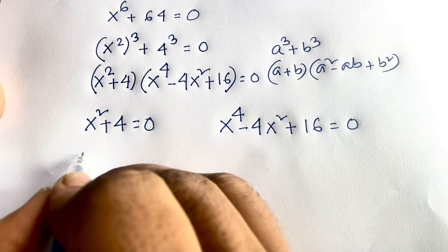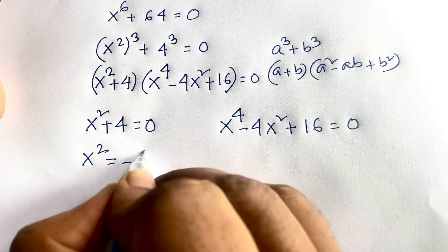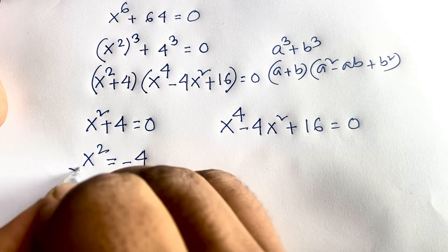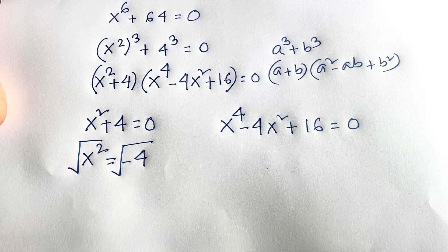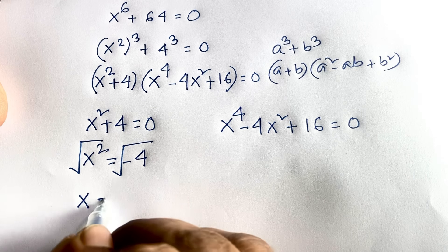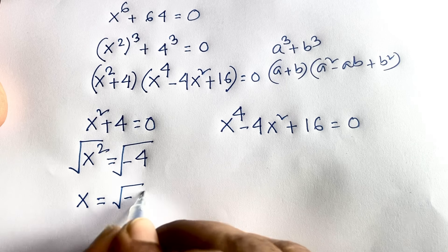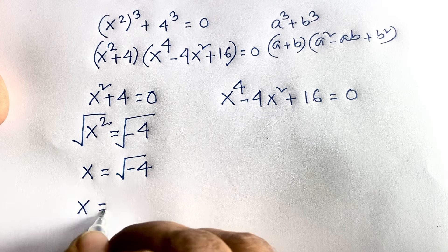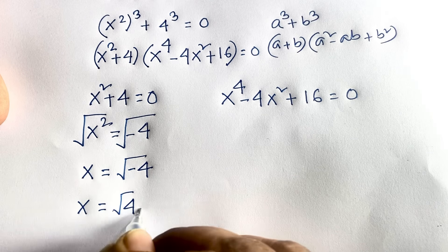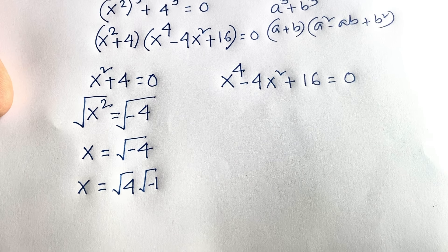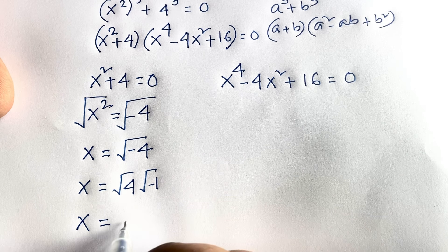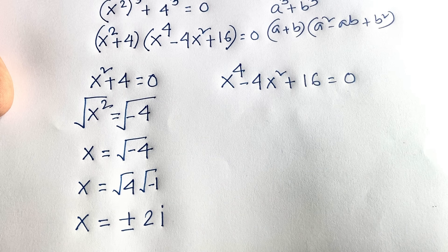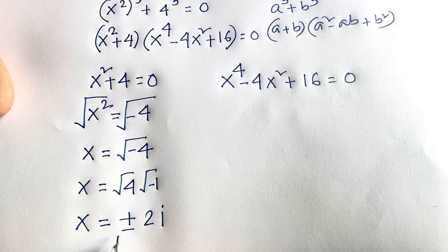From x squared plus 4 equals 0, we get x squared equals minus 4. Taking square roots on both sides, x equals the square root of minus 4, which is a complex number. We can write this as square root of 4 times square root of minus 1, giving x equals plus or minus 2i. Since square root of minus 1 equals i, these are our first two solutions x₁ and x₂.